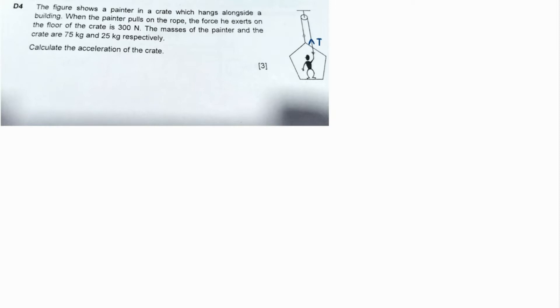Let's say he pulls with a tension T. The same tension acts over here, and there's a force due to gravity acting on the painter. A normal reaction also acts on the painter.